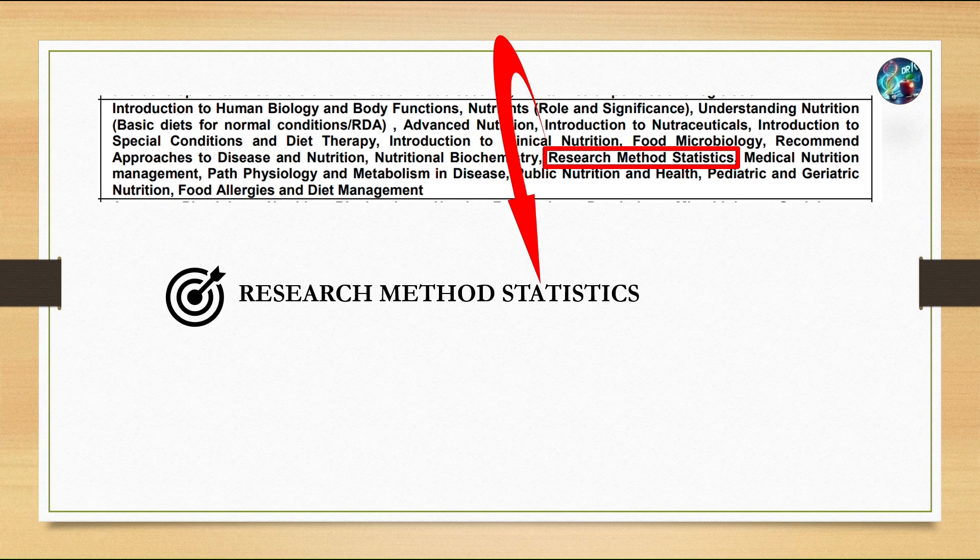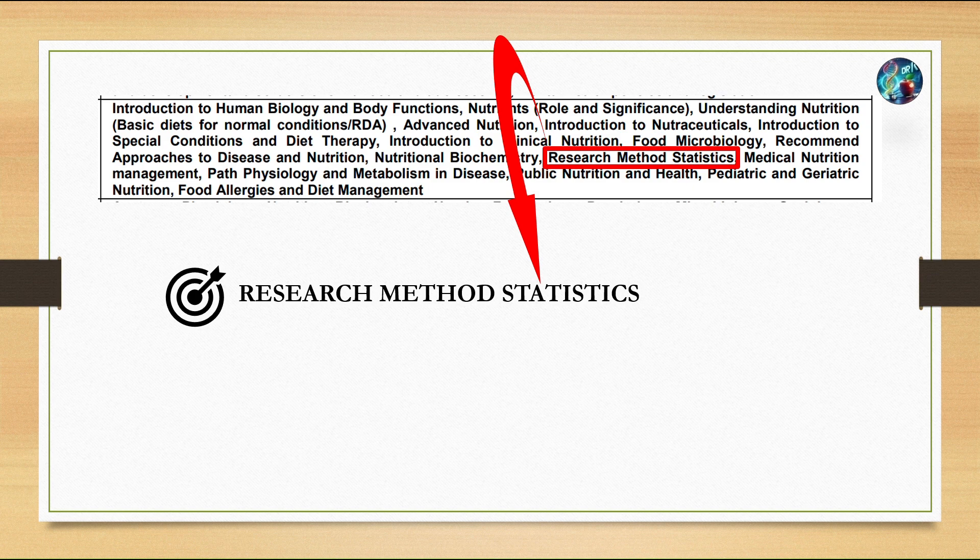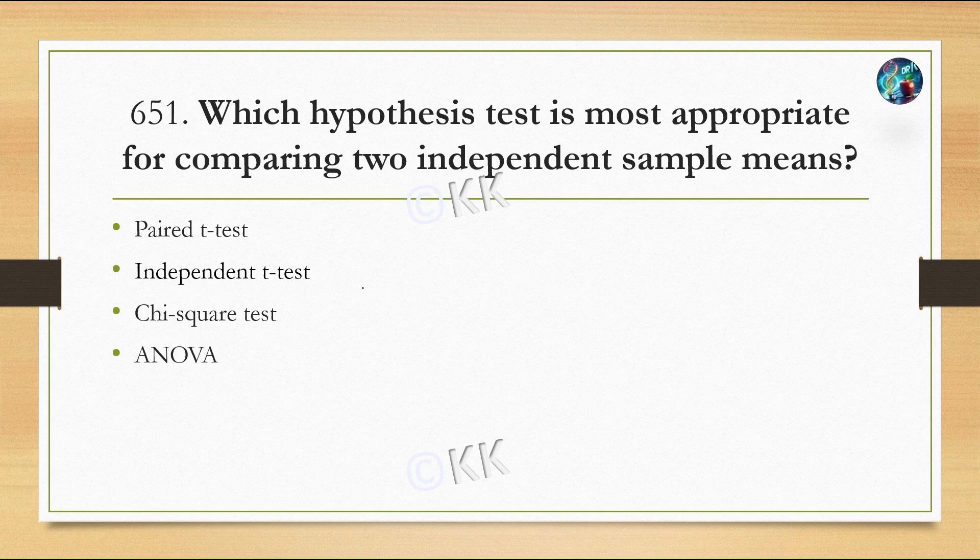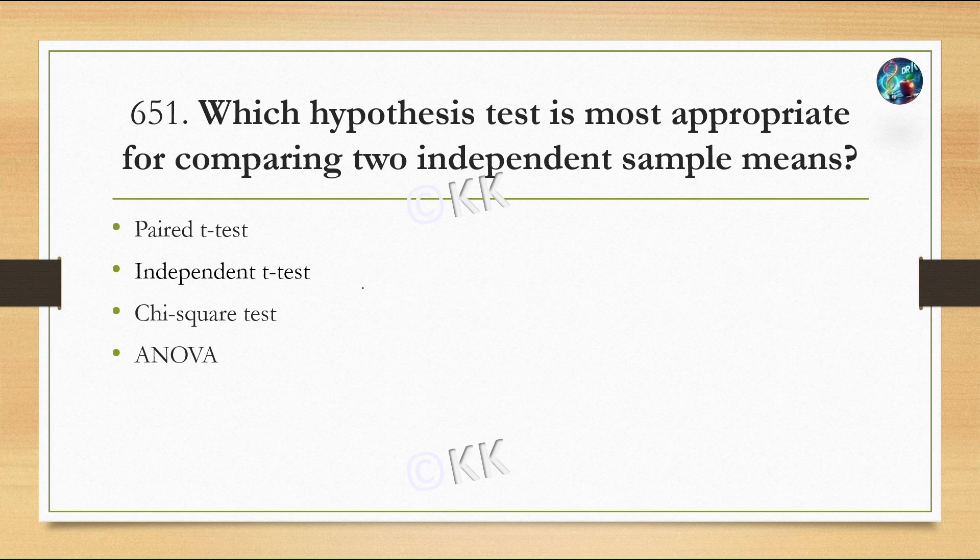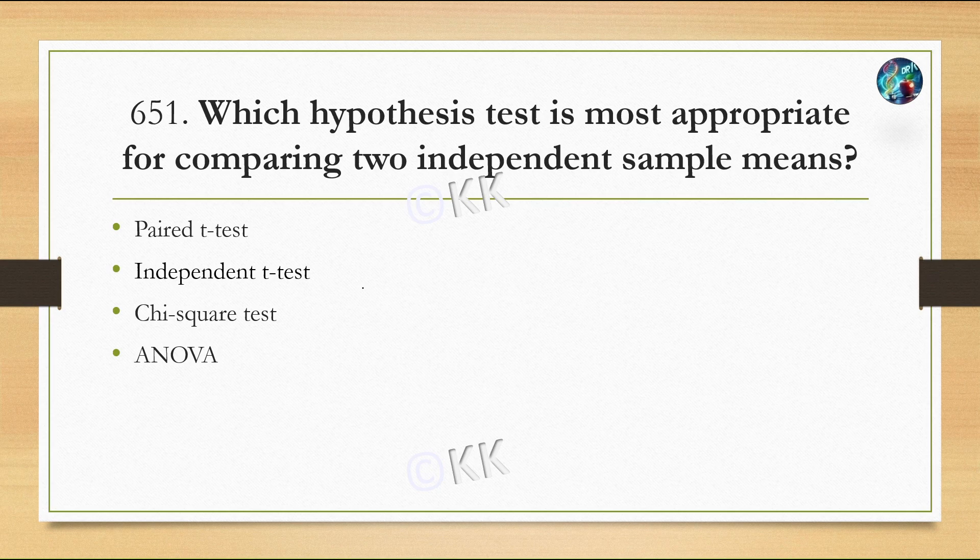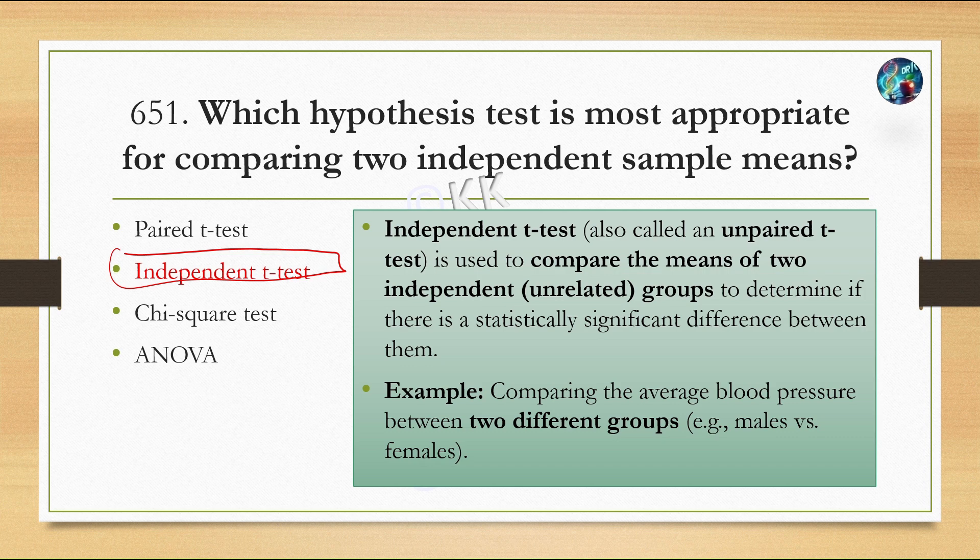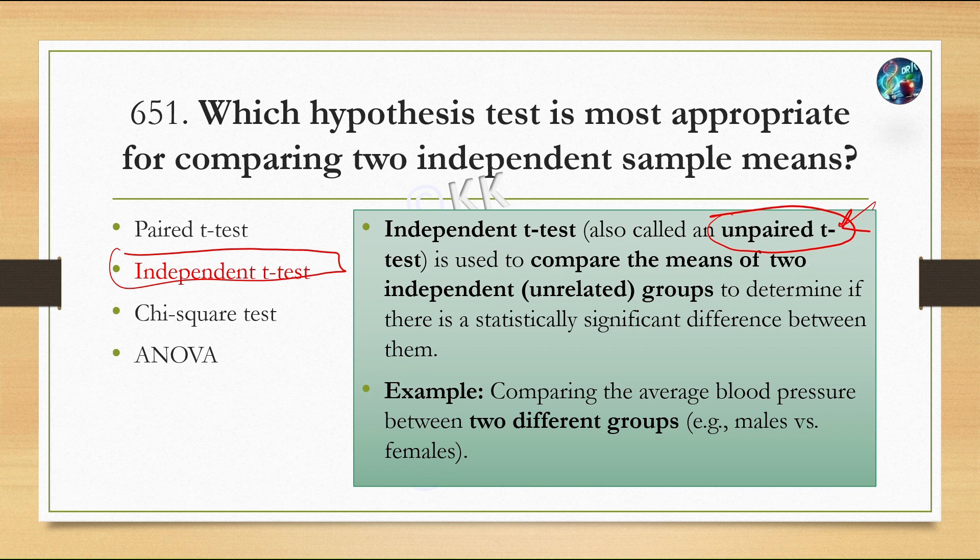Let's start with today's first question. Which hypothesis test is most appropriate for comparing two independent sample means? Option A: paired t-test, Option B: independent t-test, Option C: chi-square test, Option D: ANOVA. The correct option is Option B, independent t-test.